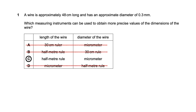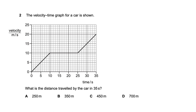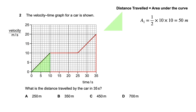A graph is given and we need to find the distance traveled by a car in 35 seconds. In a velocity-time or speed-time graph, the area under the curve is the total distance traveled. The shape is uneven but we can break it down into two triangles and one rectangle. The first triangle has base 10 and height 10, so area equals half times base times height, giving 50 meters.